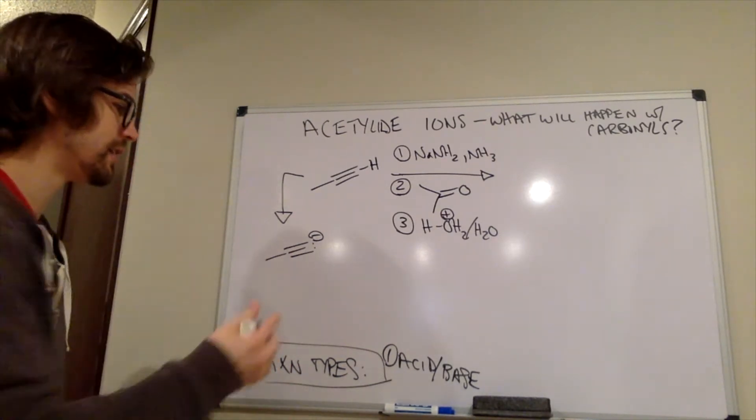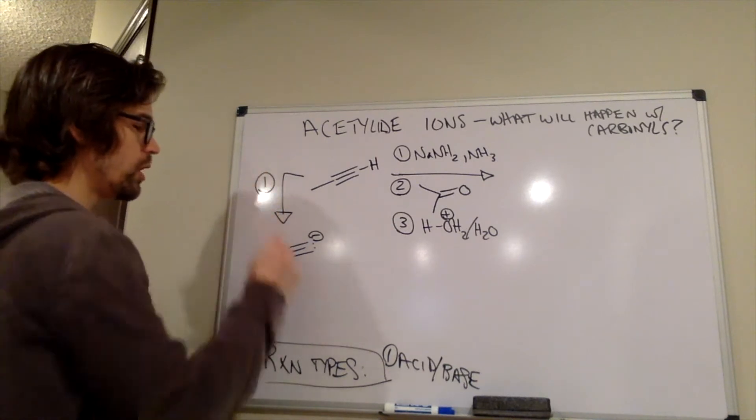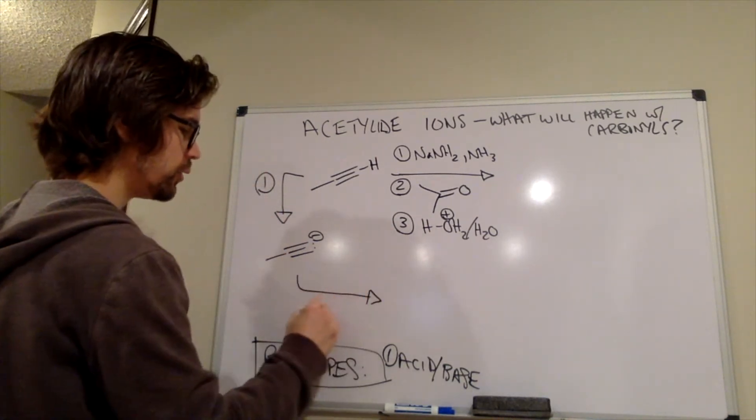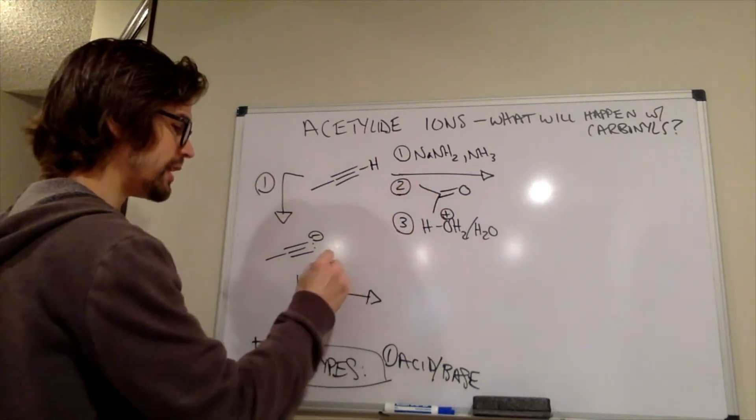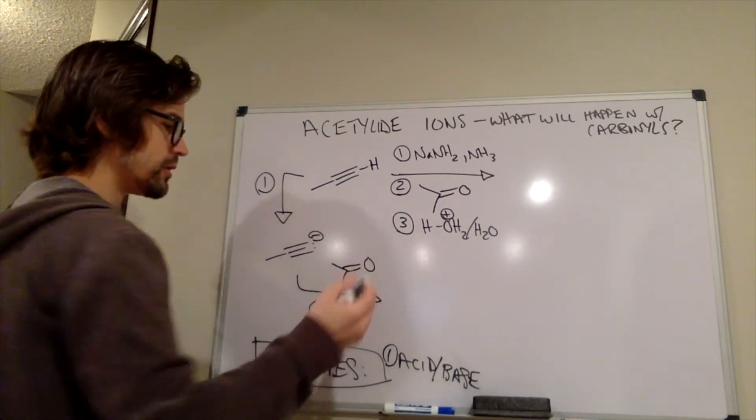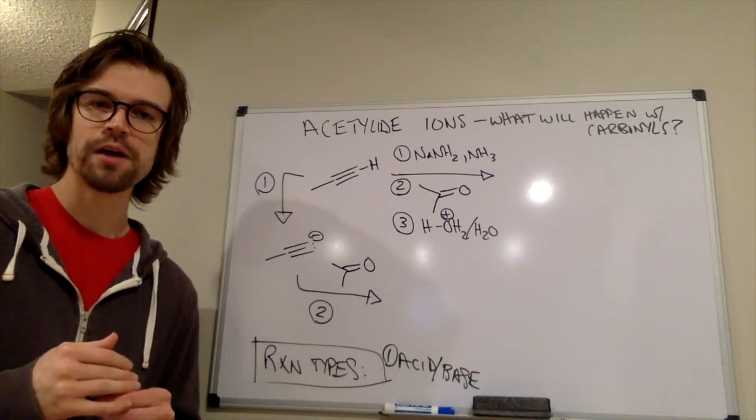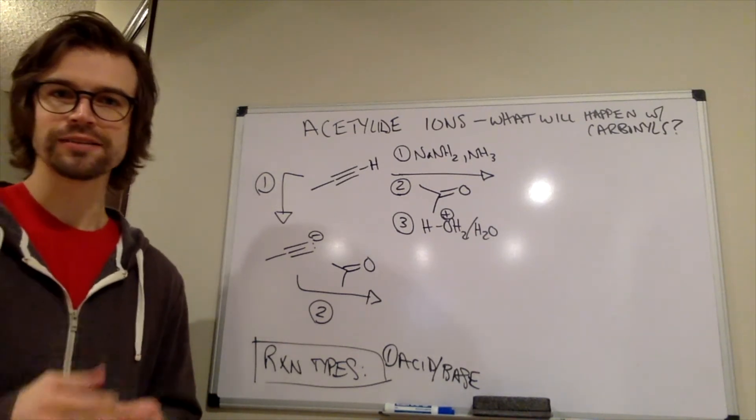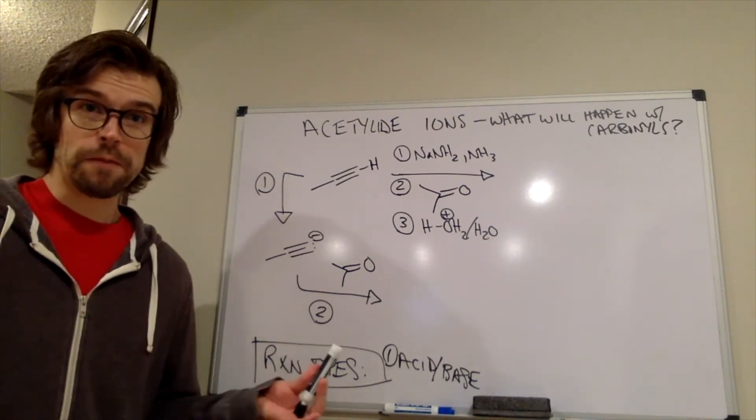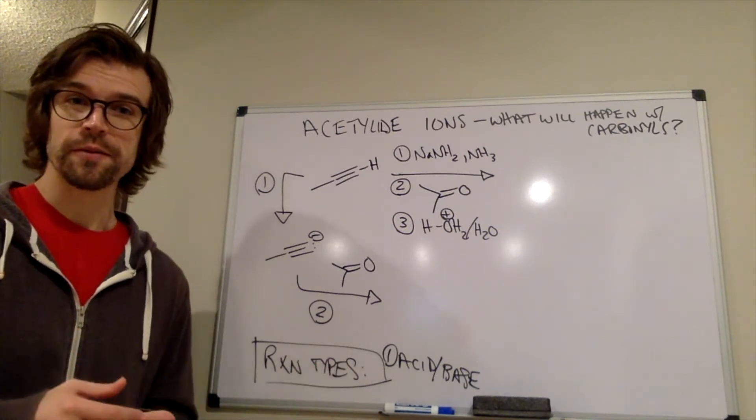What's going to happen next? So this is reagent 1, next we have reagent 2. Reagent 2 is a ketone. Looks like that. Well, what did the acetylide ion do last time? The acetylide ion last time, the negative flowed to the positive. That's kind of all organic chemistry is for the most part. Negative flowing to positives and going from high energy to low energy intermediates.